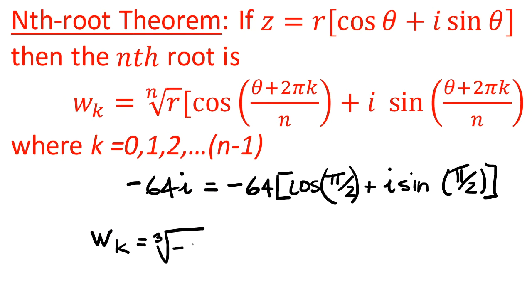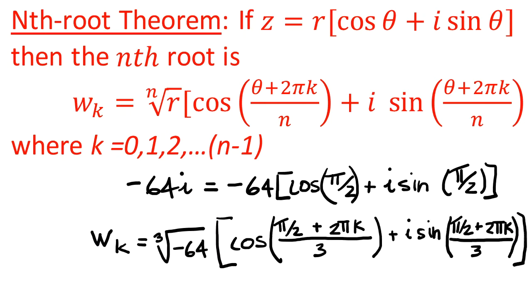Which in this case is -64, multiplied by cosine, and of course theta is π/2, plus 2πk, all over n. In this case n equals 3, and it's the same argument for the sine function. So next we'll want to simplify this expression.